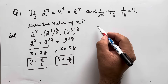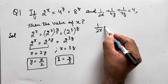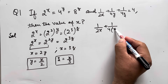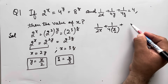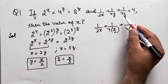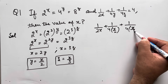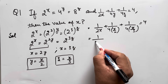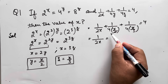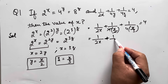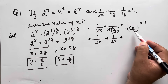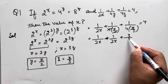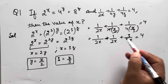Now substituting the values of y and z into the given condition: 1/(2x) + 1/(4·(x/2)) + 1/(4·(x/3)) = 4. Simplifying: 1/(2x) + 1/(2x) + 3/(4x) = 4.